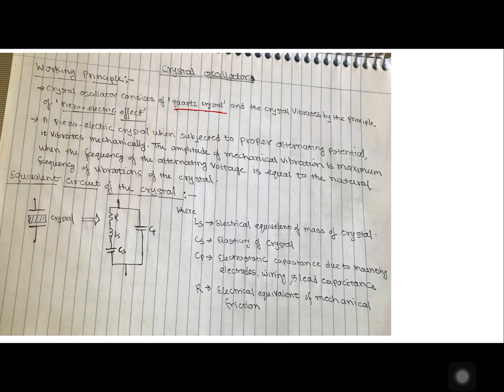Now let's discuss working principle. Crystal oscillator consists of quartz crystal which vibrates and entire operation is controlled by piezoelectric effect. This is my crystal which will vibrate when it is exposed to a proper alternating potential. The vibration of crystal can be equated to an electrical circuit.